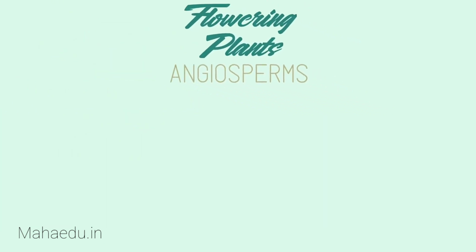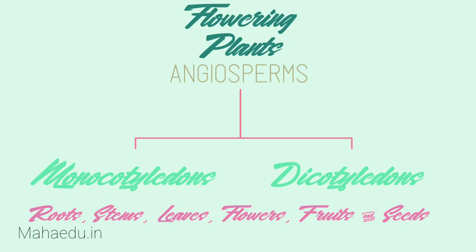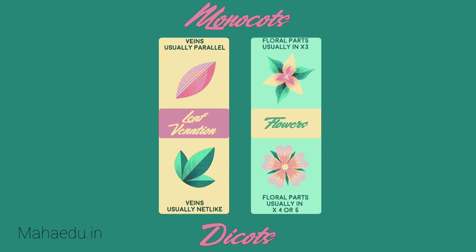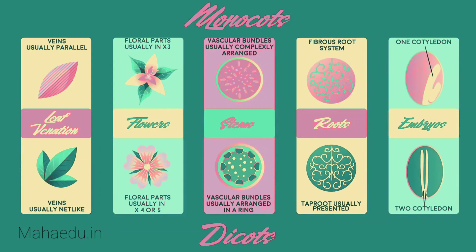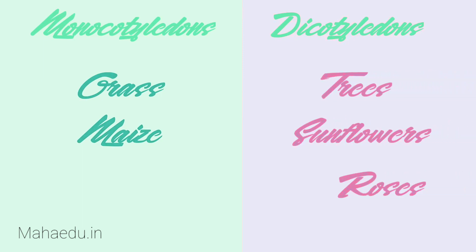Now for angiosperms — the largest and most diverse group in the plant kingdom. Angiosperms consist of two major groups: monocotyledons and dicotyledons. These groups differ with respect to roots, stems, leaves, flowers, fruits, and seeds. Some observable differences are that monocots have parallel veins and petals in groups of three, whereas dicots have net-like veins and petals in groups of four or five. Grass and maize are examples of monocots, whereas trees, sunflowers, and roses are examples of dicots.